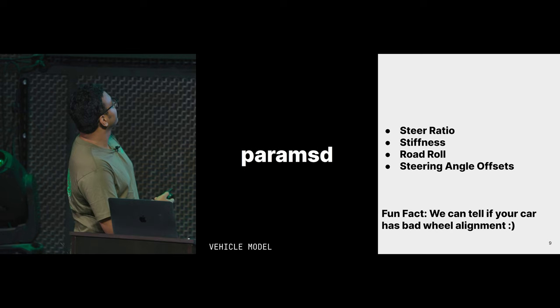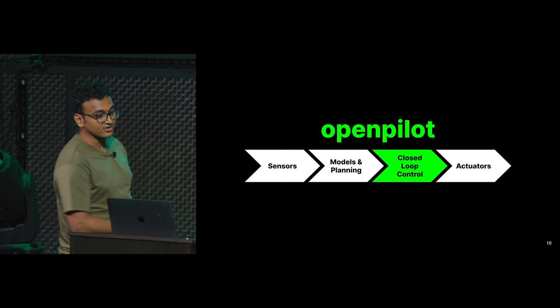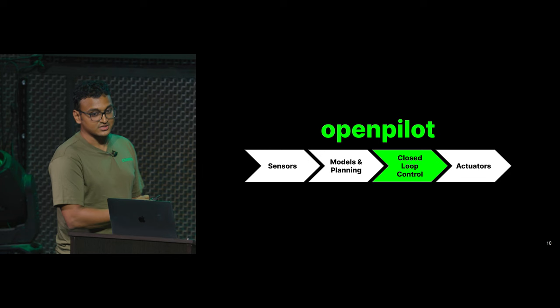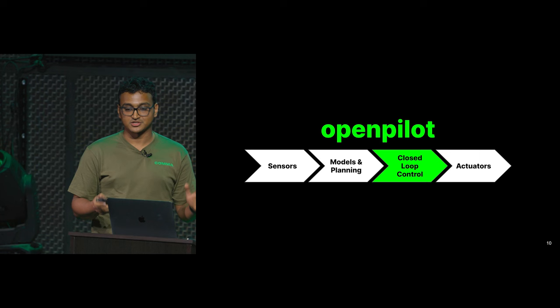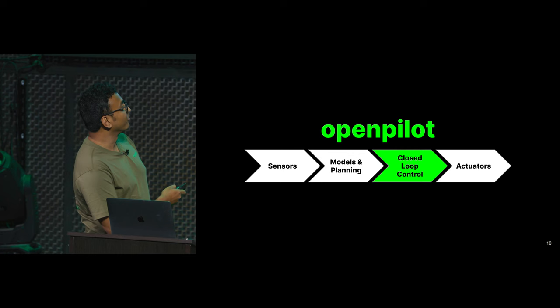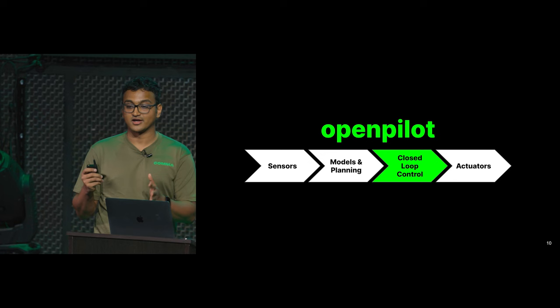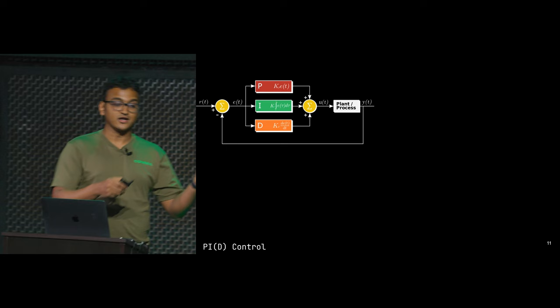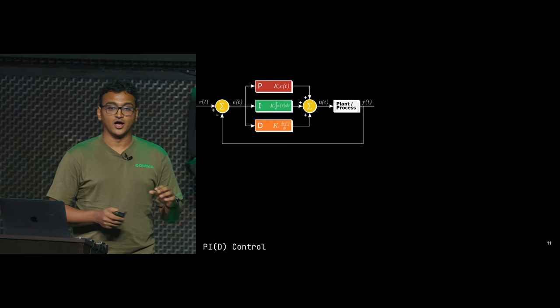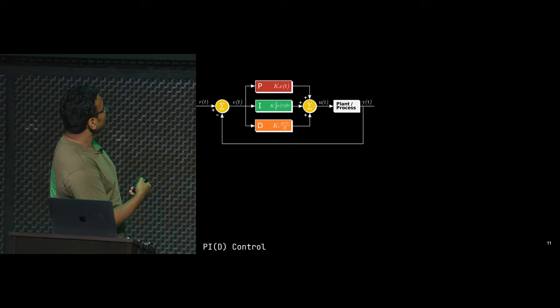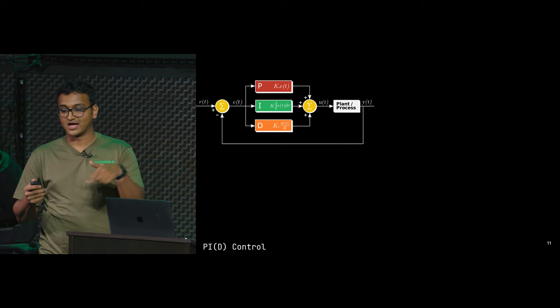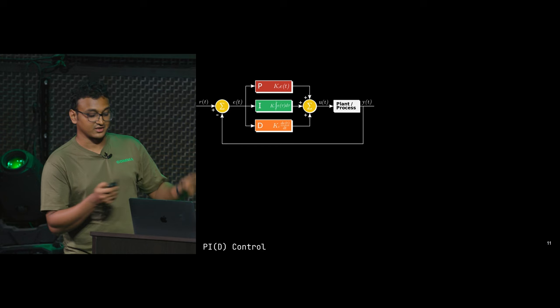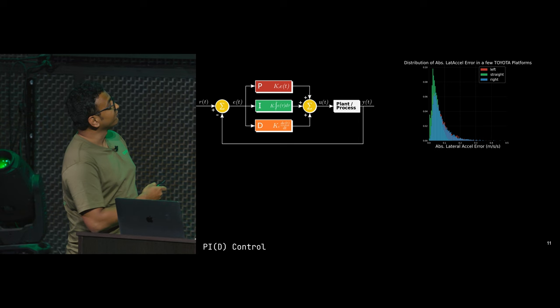Now we've learned all of this stuff — so where do we actually use it? We have sensors, which are car-agnostic. We have models and planning, which are also pretty much car-agnostic. But the actuators are specific to cars. This is where we convert the car-agnostic stuff to the car-specific stuff. We started with a maneuver we wanted to do, which is a steering angle. We used a traditional PID control: the car gives us back the steering angle, we send a command like 'go 10 degrees,' and we have a classic PID control to make sure the car is driving at 10 degrees. This is the distribution of the lateral acceleration error when you're doing these maneuvers.